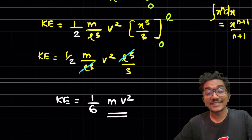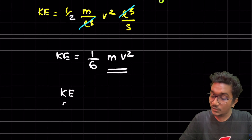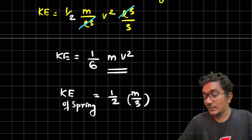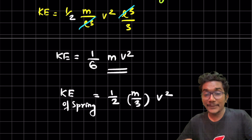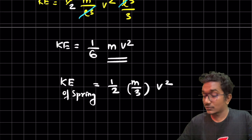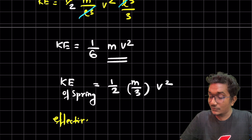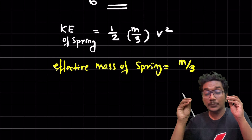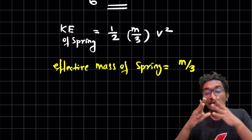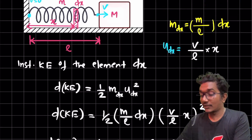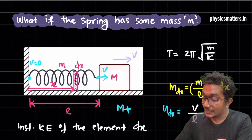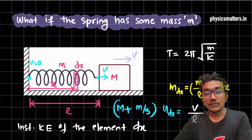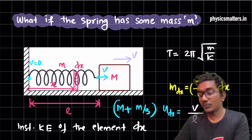The kinetic energy of the spring is (1/6)mv², which can be written as (1/2)×(m/3)×v². Comparing this with the standard (1/2)mv², the effective mass of the spring is m/3. So the net mass of the system — the block has mass capital M — will be M + m/3.